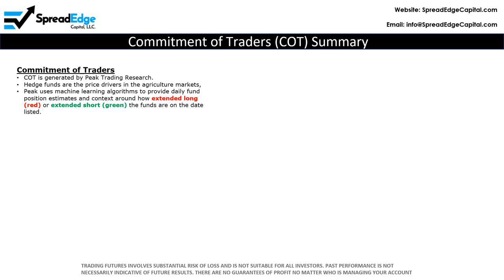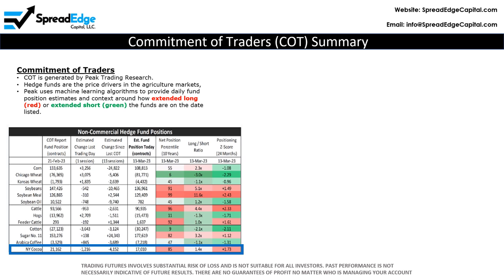Commitment of trader data, commonly referred to as COT, is generated by PEAK trading research using data published every week by the CFTC. Hedge funds are price drivers in the agriculture markets. PEAK uses machine learning algorithms to provide daily fund position estimates and context around how extended long, represented by red, or extended short, represented by green, the funds are on the date listed on the report. Funds are extended long on Cocoa contracts, as indicated by the red shading.